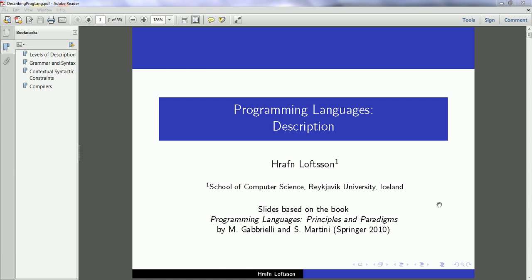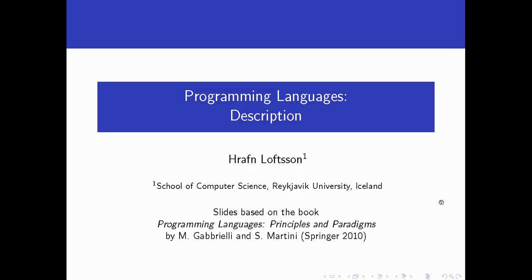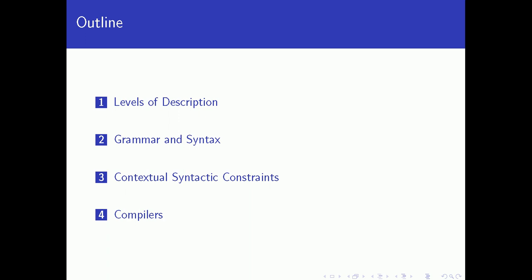Hello everyone, and welcome to our discussion on the description of programming languages. Here is the outline of this topic: we'll start with the different levels of description of languages in general, then we'll talk about grammar and syntax, then about syntactic constraints — what are called contextual syntactic constraints — and we'll finish discussing compilers and the individual phases of compilers.